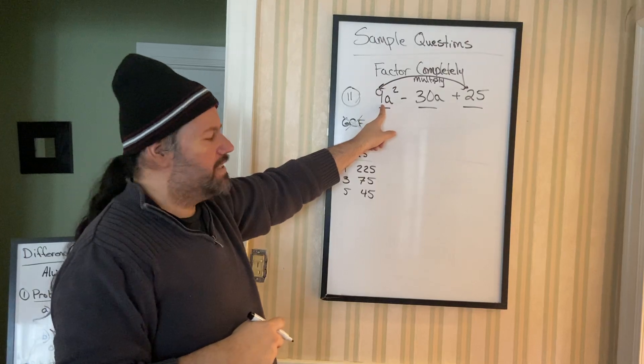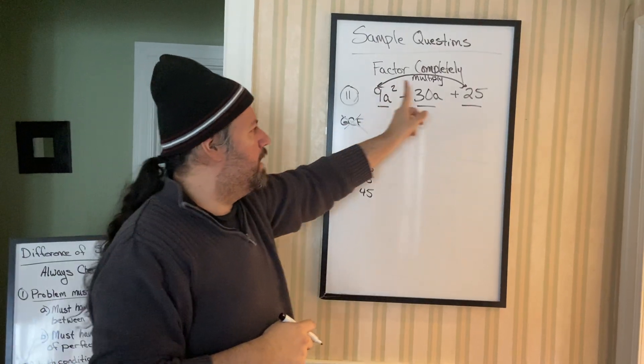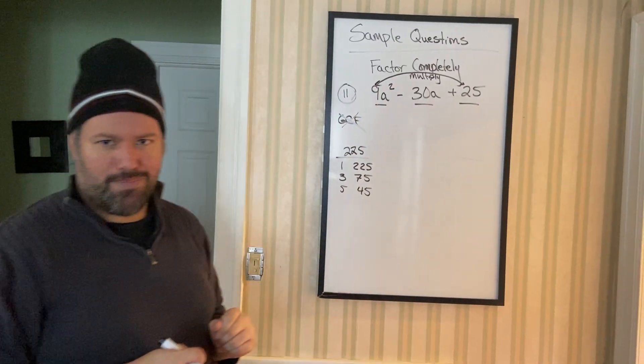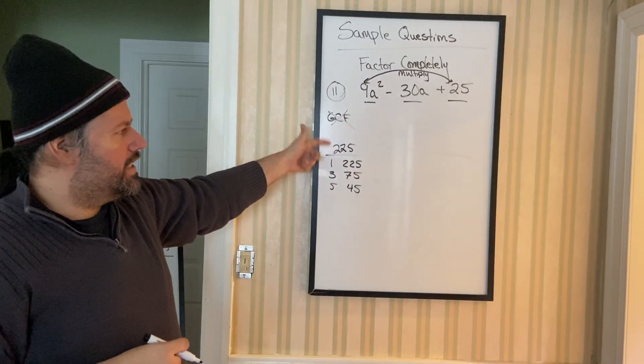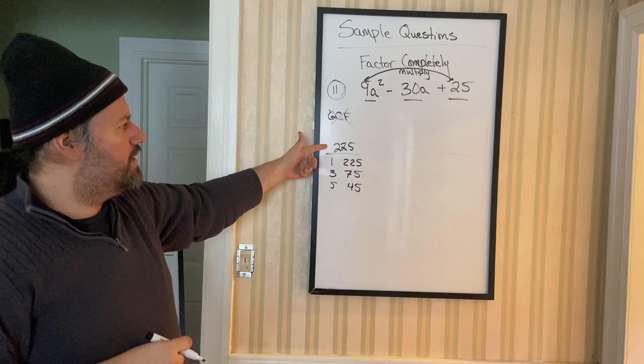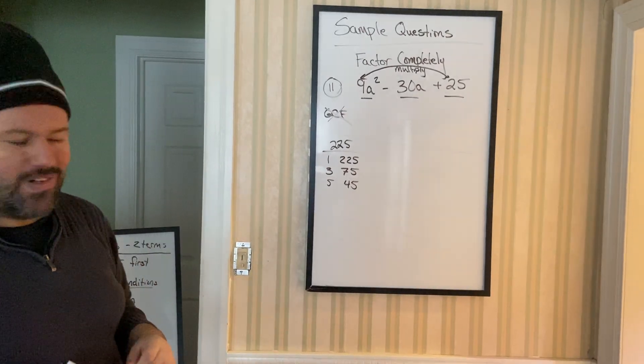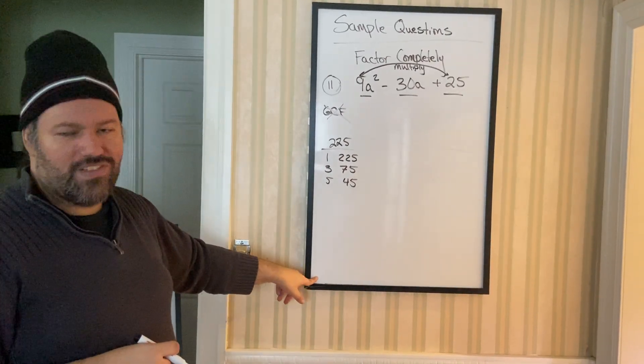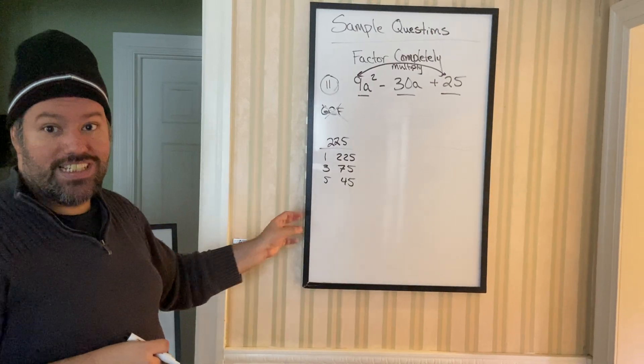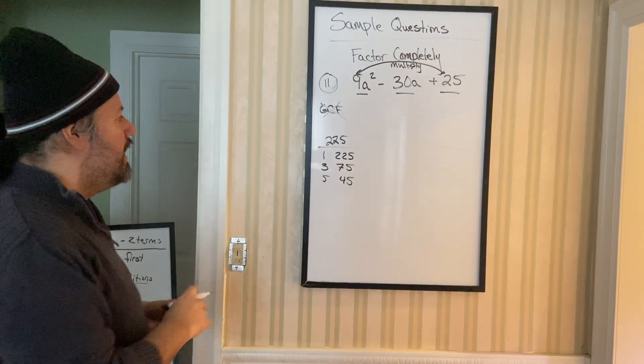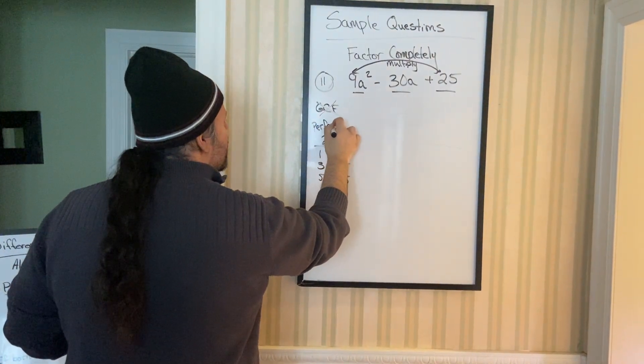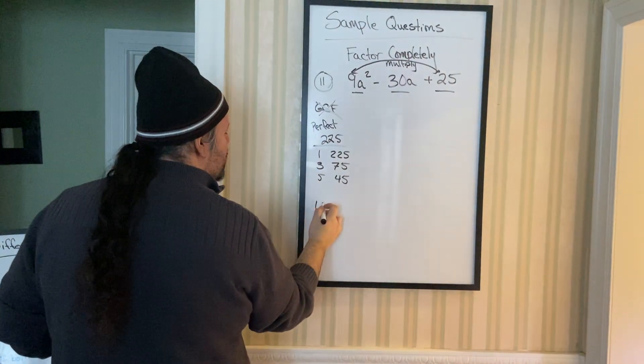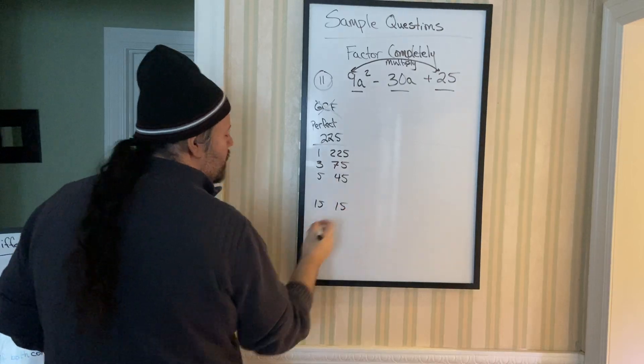If you recognize that this is a perfect square number and this is a perfect square number, that means this is a perfect square when you multiply it. So 9 times 25 is 225. Remember on the list 225 was the last one on the list? That was 15 times 15. If you know this is a perfect square, then we know that the combination 15 and 15 would work.